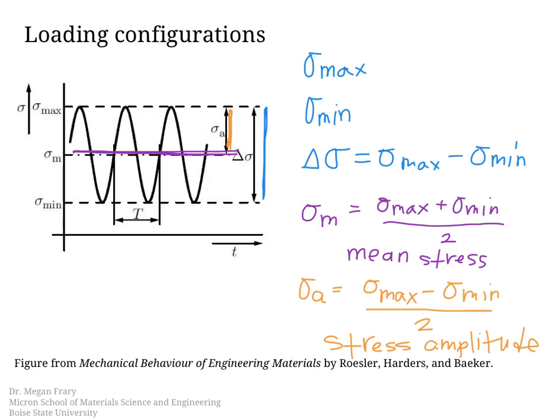So it will depend also on is this cycling happening entirely in tension, entirely in compression, or is it being reversed between tension and compression? And it would be helpful to have some single parameter which gave us some sense of what the cycle was like. And for that purpose, we define the stress ratio r. And r is defined as sigma min divided by sigma max.